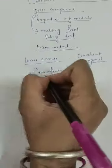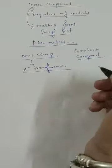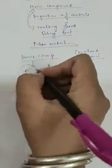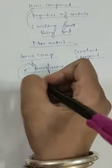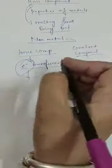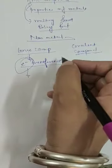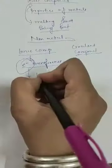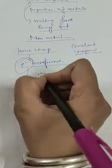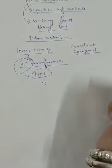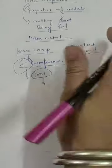Ionic compounds are formed by the transference of electrons from metal to non-metal. When we dissolve ionic compounds, they convert into ions, and these ions are responsible for the conduction of electricity.